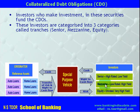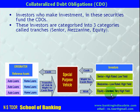The first category represents highly rated assets but with low yield — these investors are called senior investors. The second category is mezzanine investors, who are entitled to low rated but high yield assets. The third category is equity investors, who get rights over unrated securities.